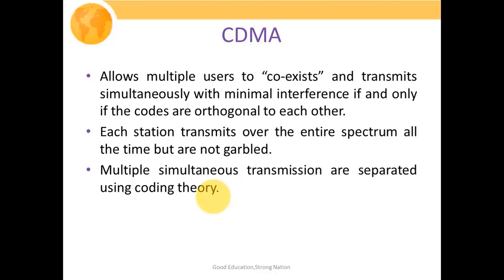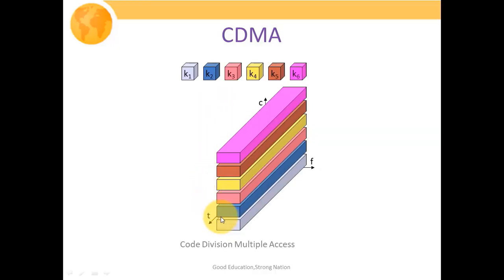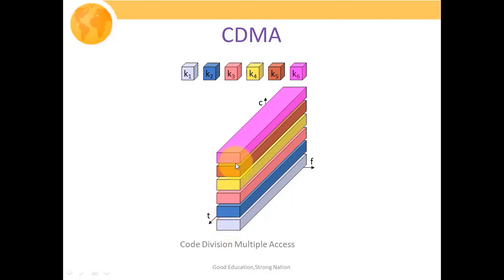This figure shows code division multiple access. We consider three access dimensions: frequency, code, and timing. Here we have not divided frequency or time — all users use the same time and same frequency — but the division is formed in the coding domain. We provide distinguished users from K1 to K6 with distinguished codes, and what is peculiar about those codes is that they are orthogonal to each other. This is how CDMA systems work.